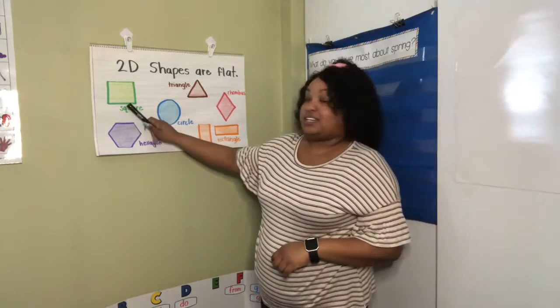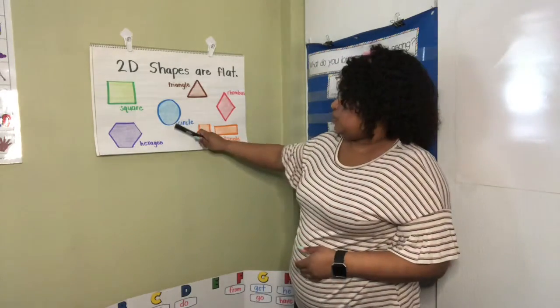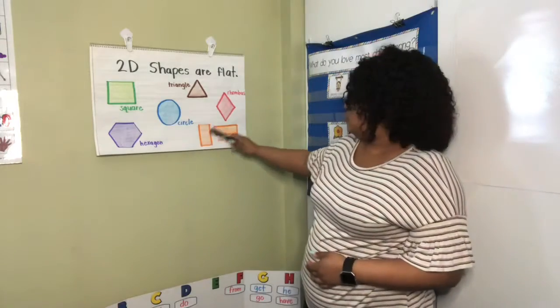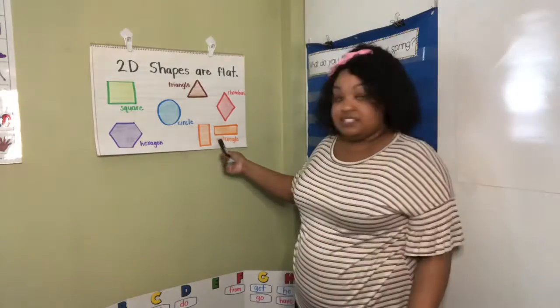We learned about the square, triangle, circle, rhombus, hexagon, and rectangle.